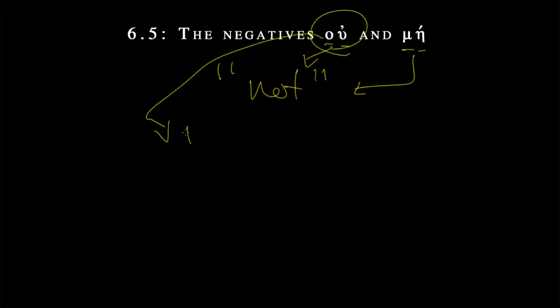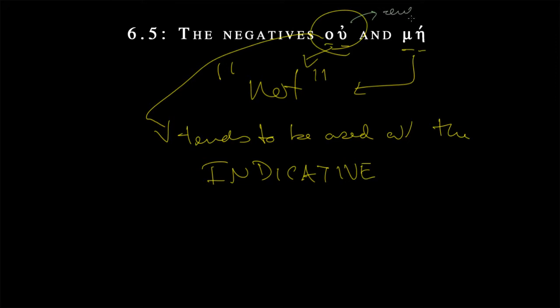Oo, as we're going to find out, tends to be used with the indicative. So I was not stopping, I will not stop, I did not stop, I am not stopping. All those forms that we've found so far—with the infinitive, sorry, not the infinitive, but rather the indicative—we're used to working with at this point.